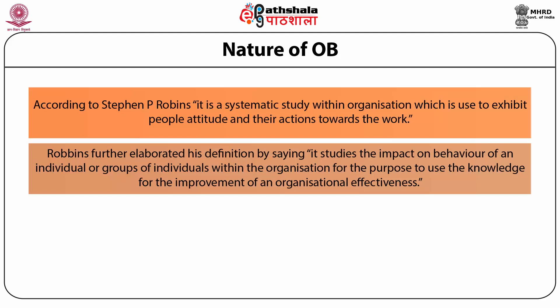According to Stephen P. Robbins, OB is a systematic study within an organization used to exhibit people's attitudes and actions towards work. Robbins further elaborated that it studies the impact on behavior of an individual or groups within the organization to use that knowledge for improving organizational effectiveness. According to Clark, OB means how an individual or group acts in the organization. Davis defined OB as the overall study of human behavior, structure, technology, environment and shape. Luthans defines OB as the combination of total interaction and their interdependency.